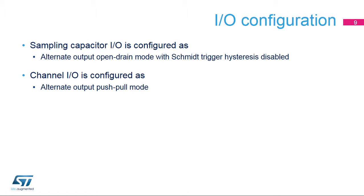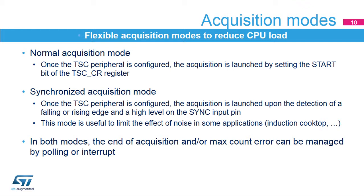In order for a touch-sensing GPIO to be controlled by the TSC, a sampling capacitor I/O must be configured in alternate output open-drain mode, and the Schmitt trigger hysteresis must be disabled to avoid artifacts. A channel I/O must be configured in alternate output push-pull mode. Two acquisition modes are supported to reduce CPU load: Normal acquisition mode, where acquisition starts by setting the start bit of the TSC_CR register, and Synchronized acquisition mode, where acquisition only starts upon detection of a falling or rising edge and a high level on the sync input pin. This mode is useful to limit effective noise in applications such as an induction cooktop. In both modes, end-of-acquisition and max-count error can be managed by polling or interrupt.